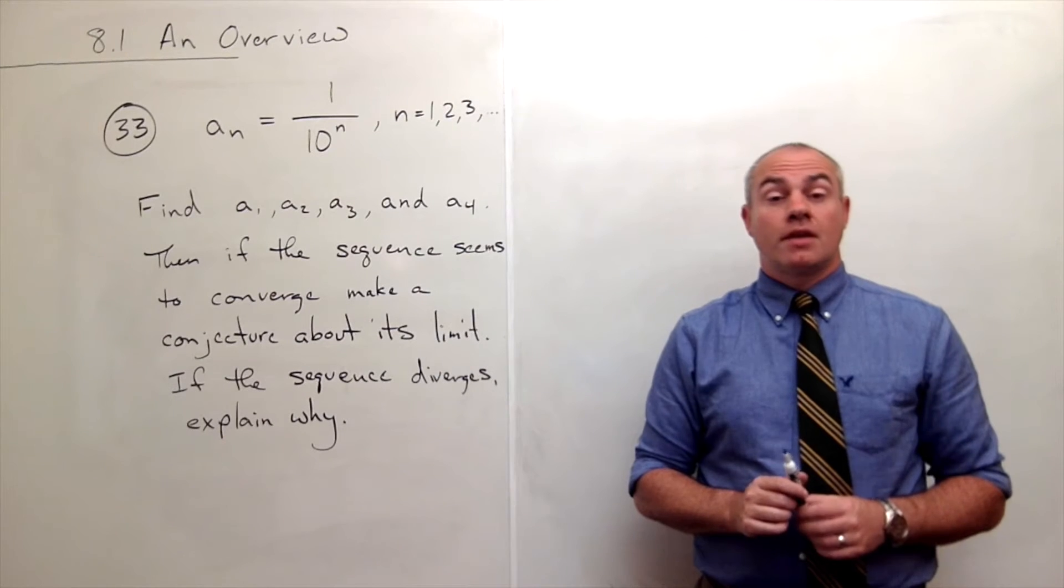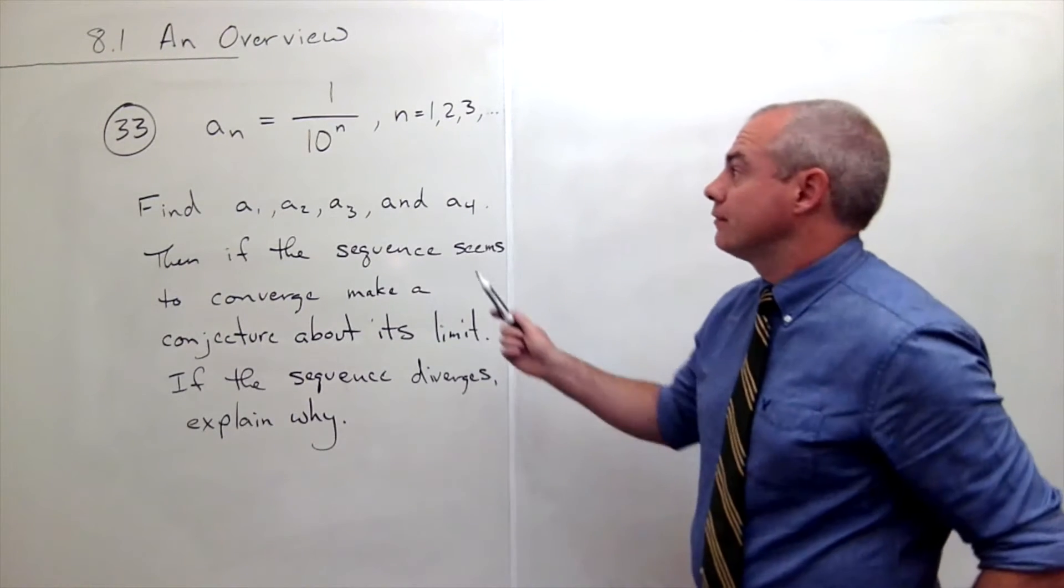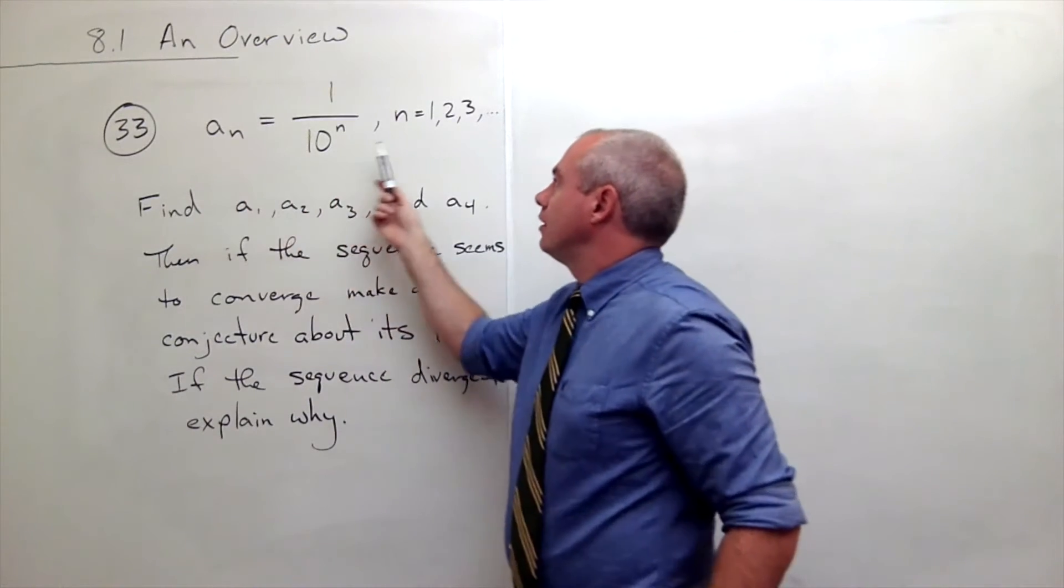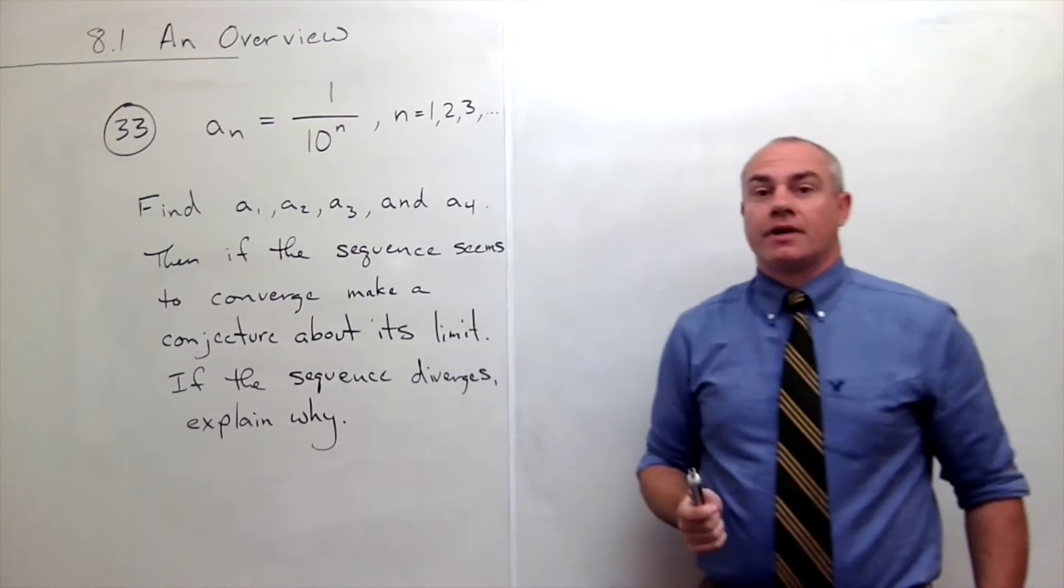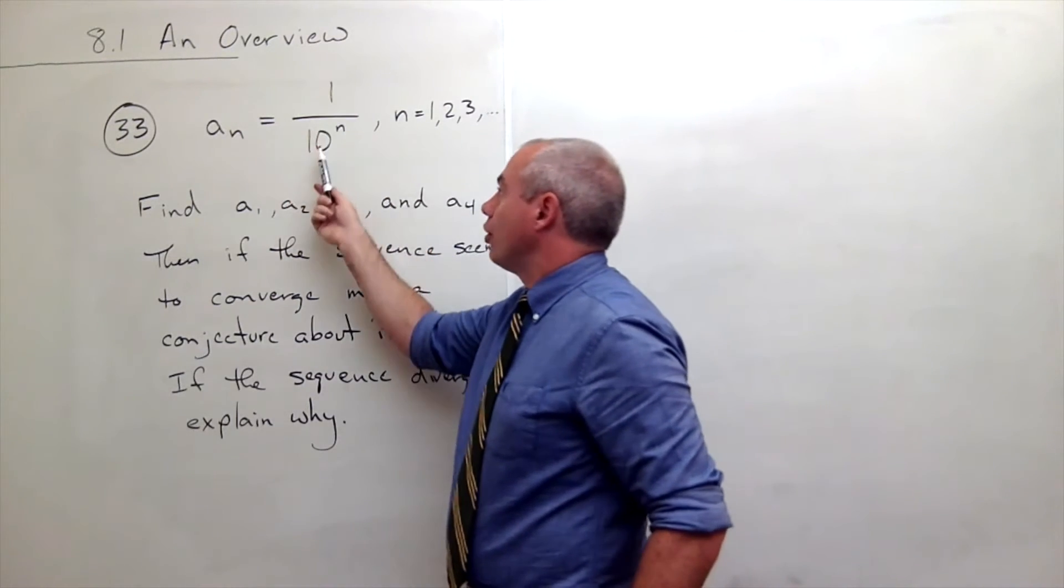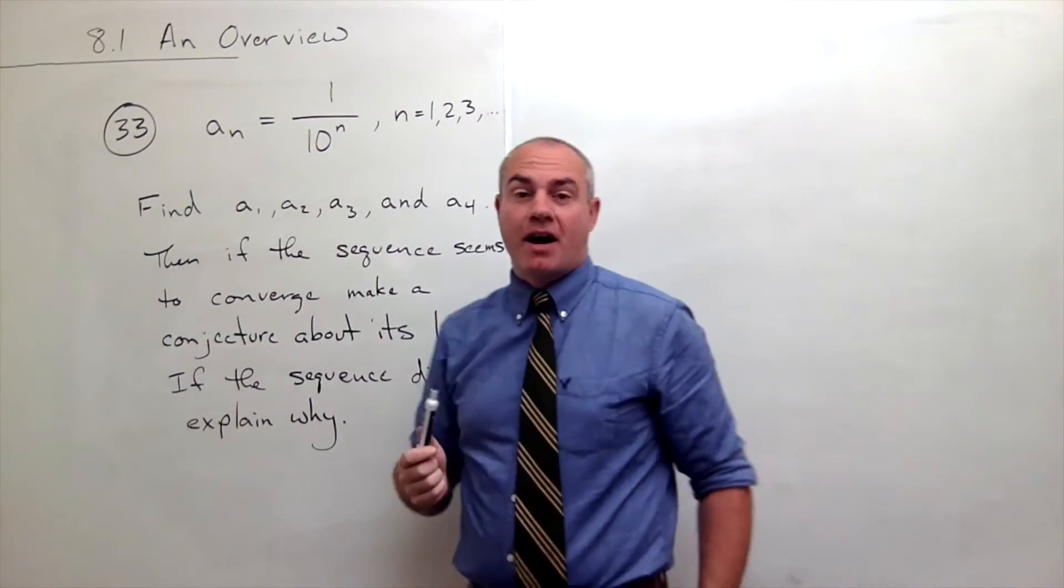I'm a calculus professor and today I'll be talking about an overview, specifically of sequences. In problem number 33, we have this closed form for a sequence. We have a_n equals 1 over 10 to the nth power.